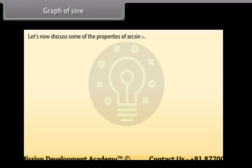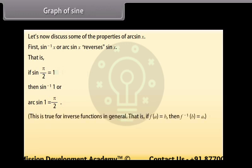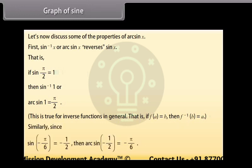Let's discuss some properties of arc sin x. sin⁻¹ x reverses sin x. That is, if sin(π/2) = 1, then sin⁻¹(1) = π/2. This is true for inverse functions in general: if f(a) = b, then f⁻¹(b) = a. Similarly, since sin(-π/6) = -1/2, then arc sin(-1/2) = -π/6.